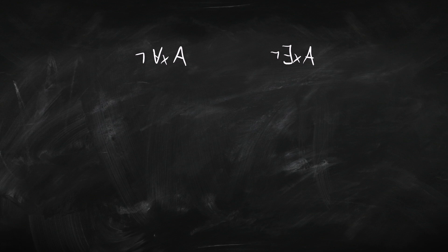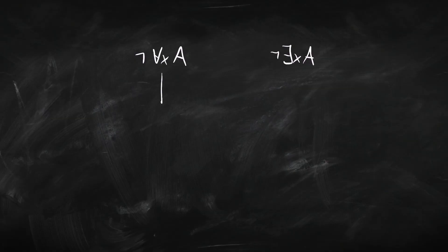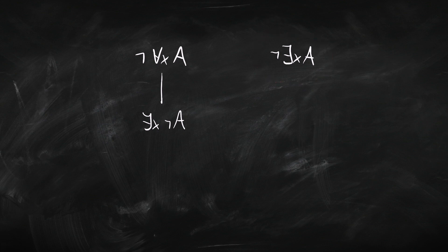These are really simple. When we've got a negated universal quantifier, that means the same thing as an existential quantifier. So if not everyone's happy, then somebody isn't happy — we can change 'not for all x A' into 'there is an x, not A'. Similarly, the negated existential is basically going to be a universal. So 'not there is an x A' becomes 'for all x, not A'. Once you've applied those rules, you can tick them off.